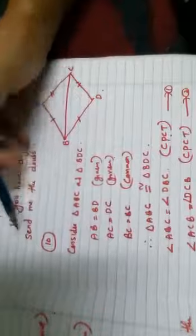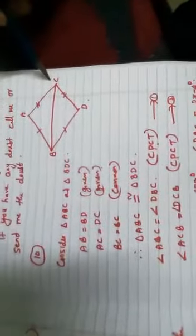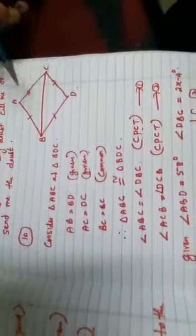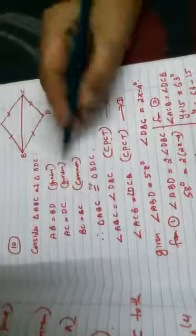Question number 10. Consider the triangle ABC and BDC. Here, AB is equal to BD given, DC is equal to AC given, BC is equal to BC common. Therefore, by SSS, these two triangles are congruent.